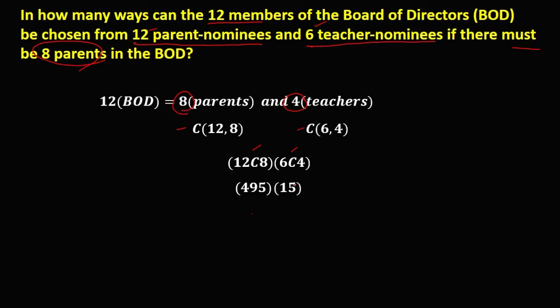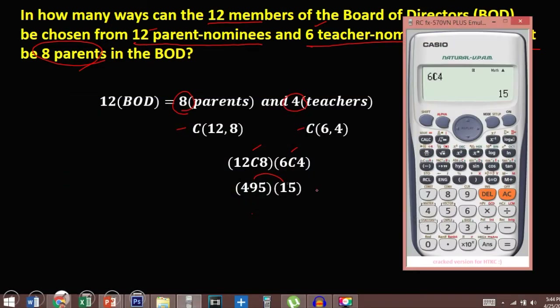Multiplying these two numbers: 495 times 15 gives us 7,425.